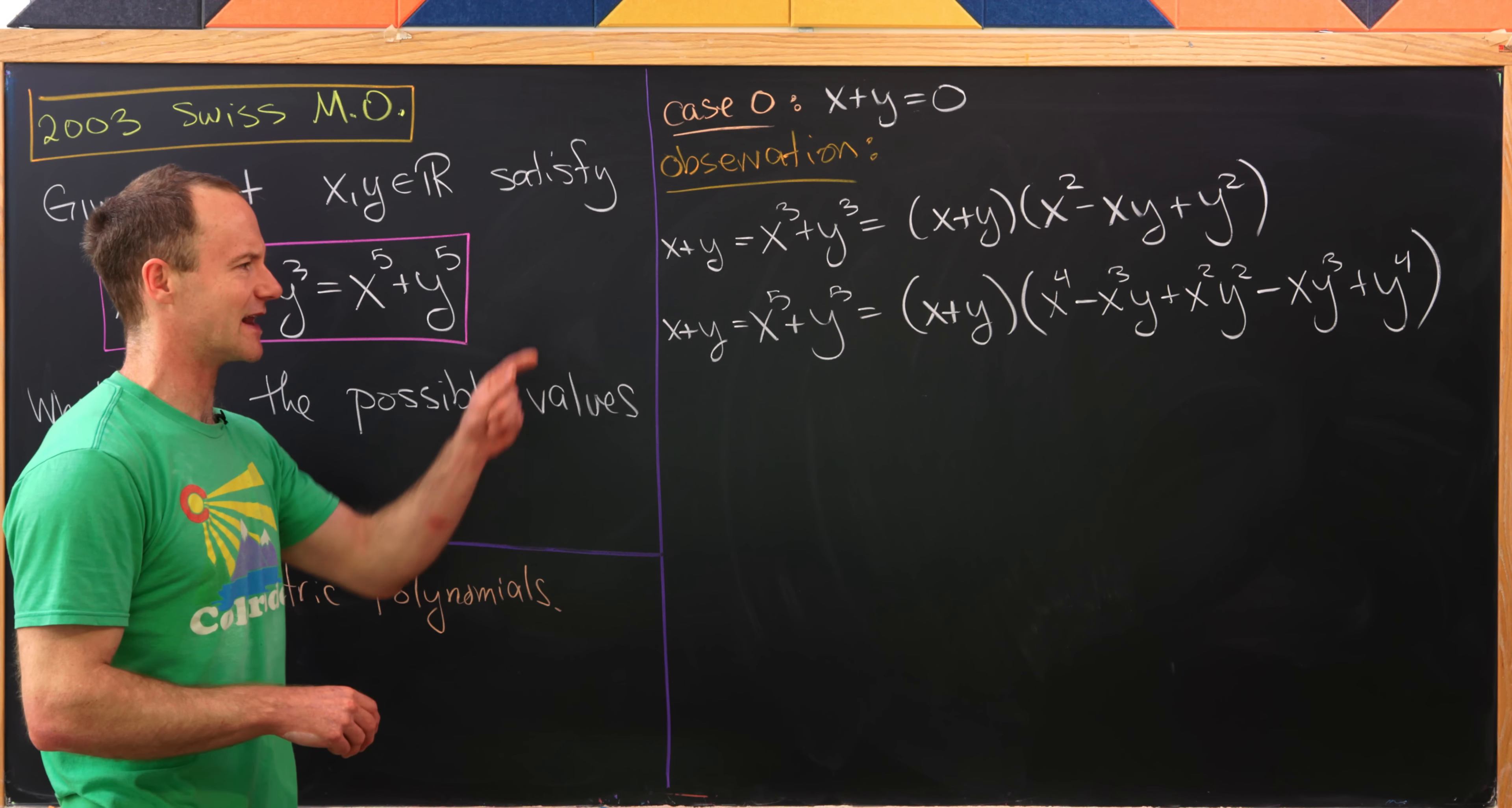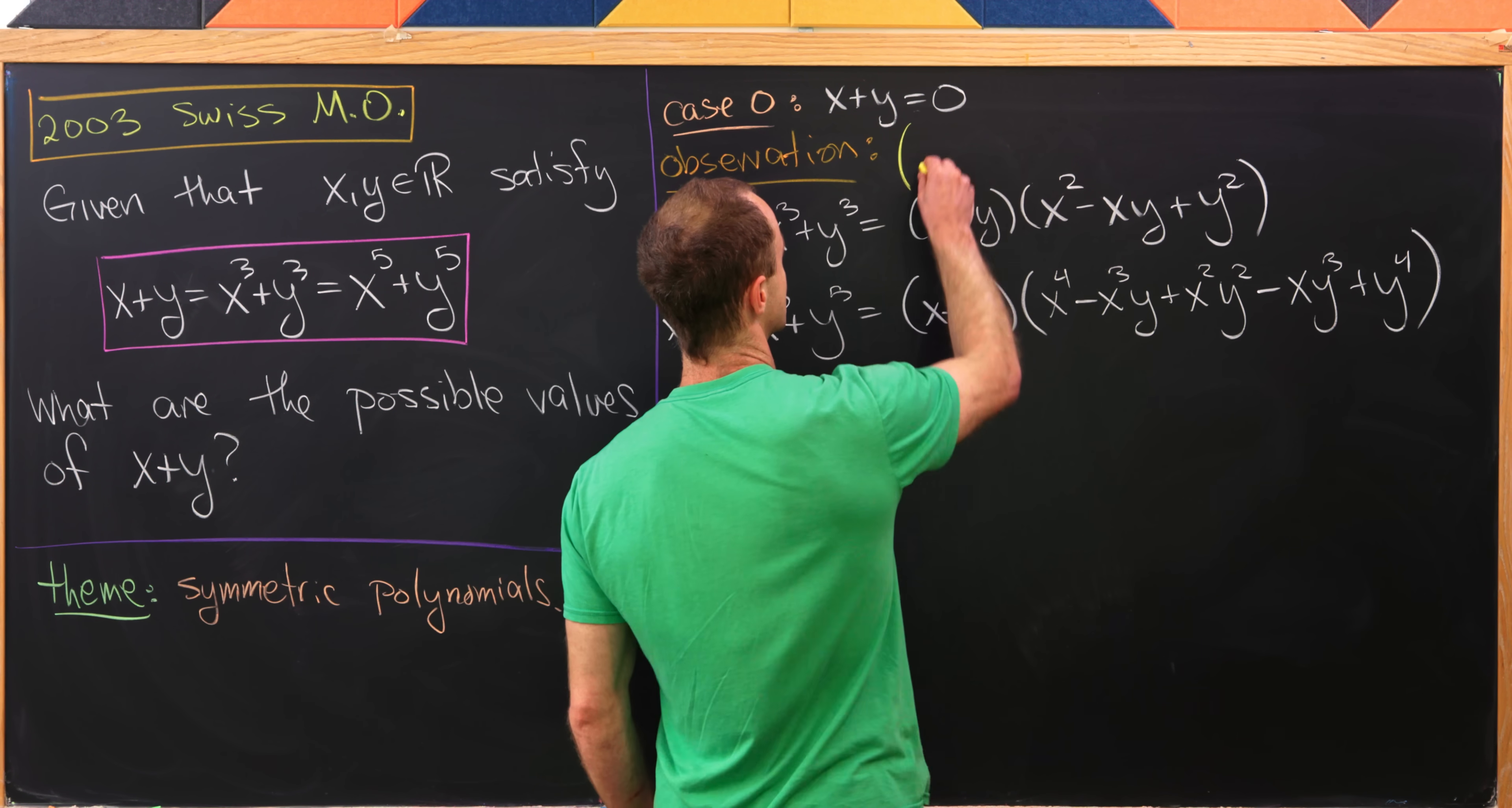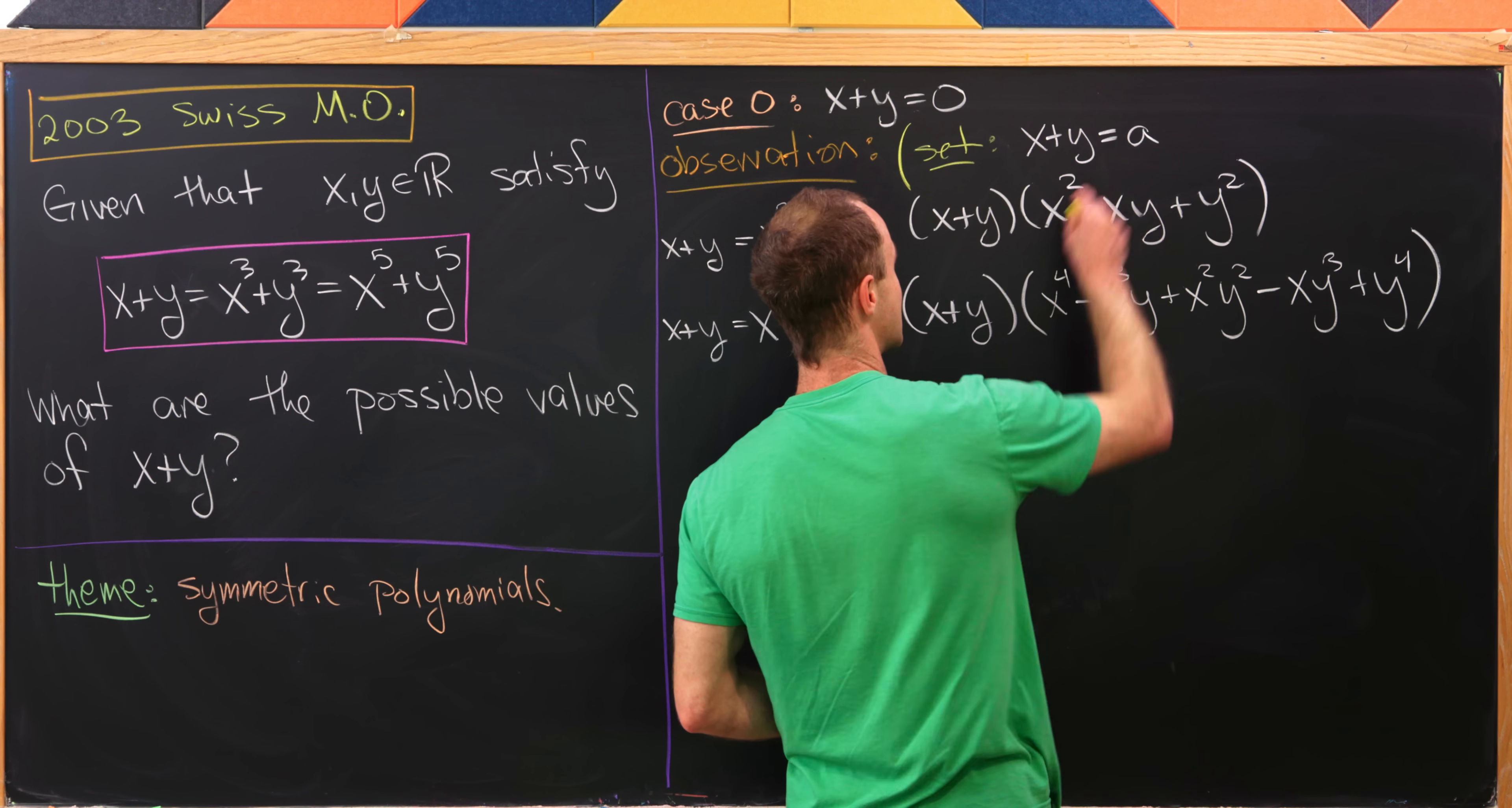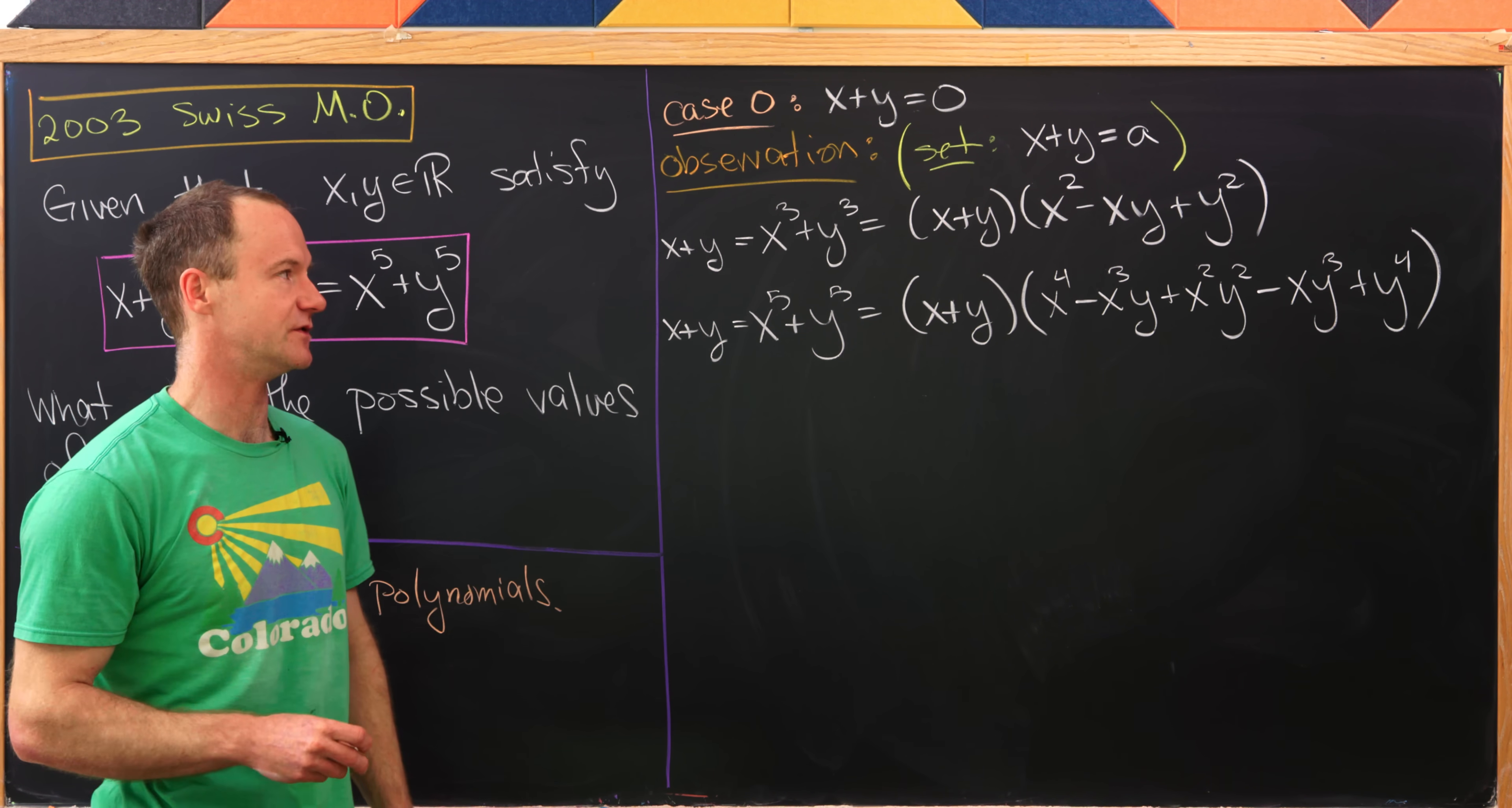And then actually while I'm at it, I notice that a bunch of x plus y's are going to be floating around. So let's maybe introduce some notation. Let's set x plus y equal to a. In the statement of the problem they set this up already, but I didn't do it in our version, just as a reminder that you can introduce simplifying notation if you need to.